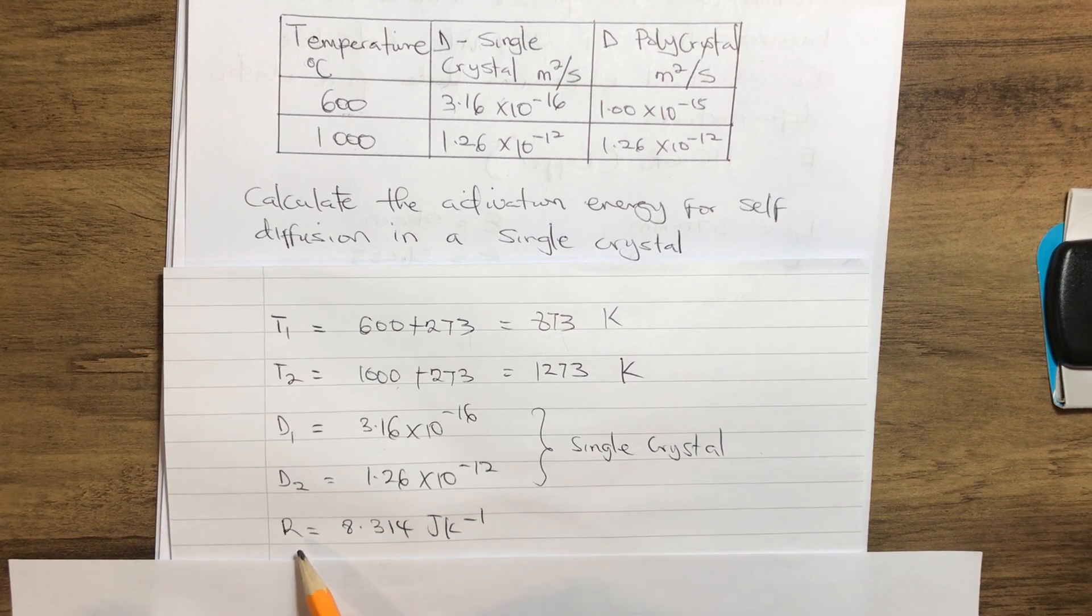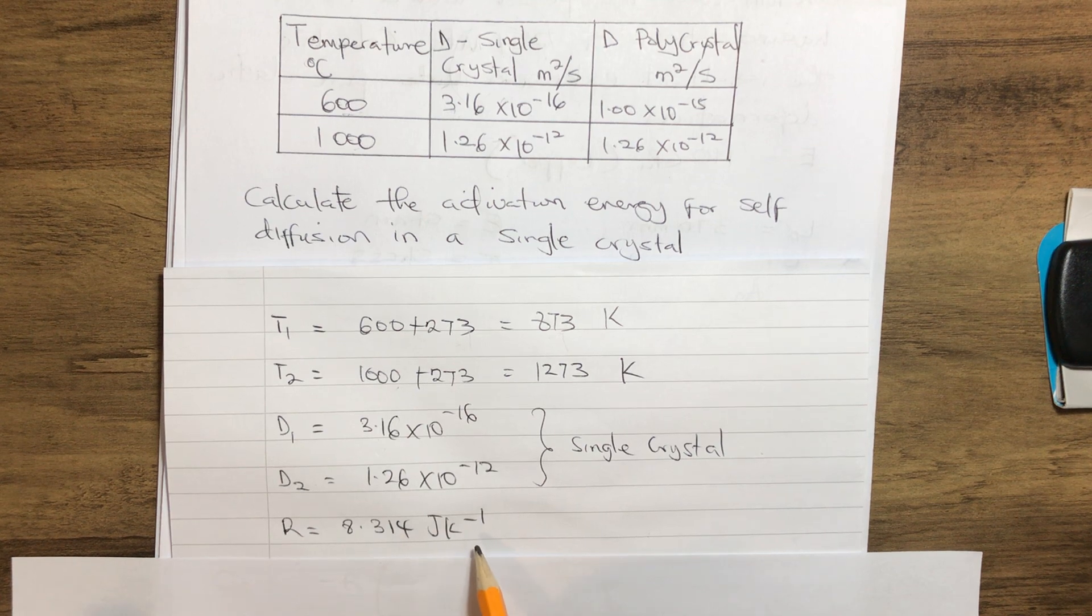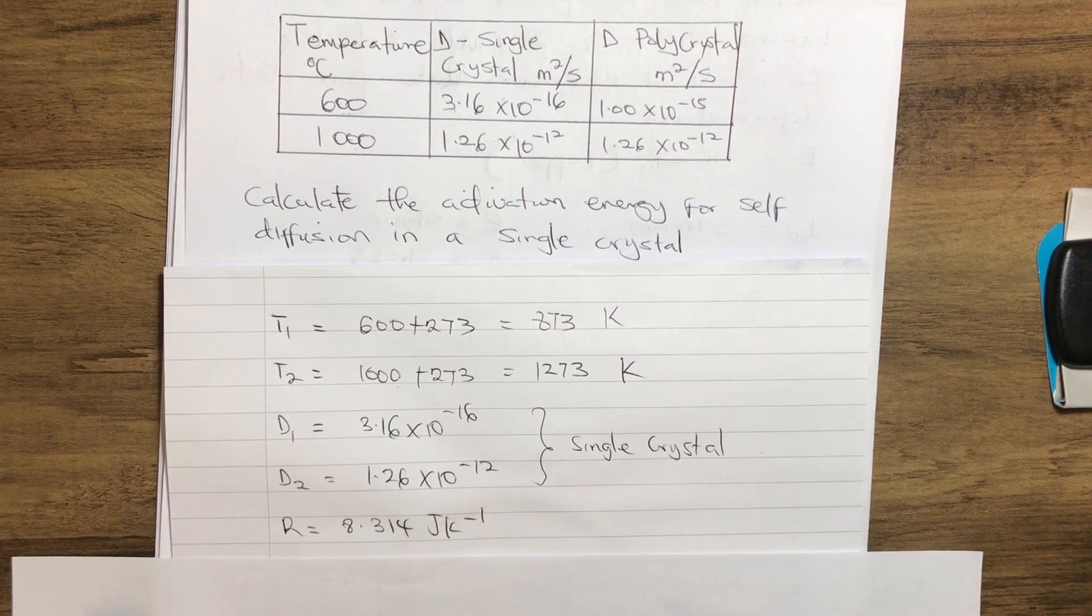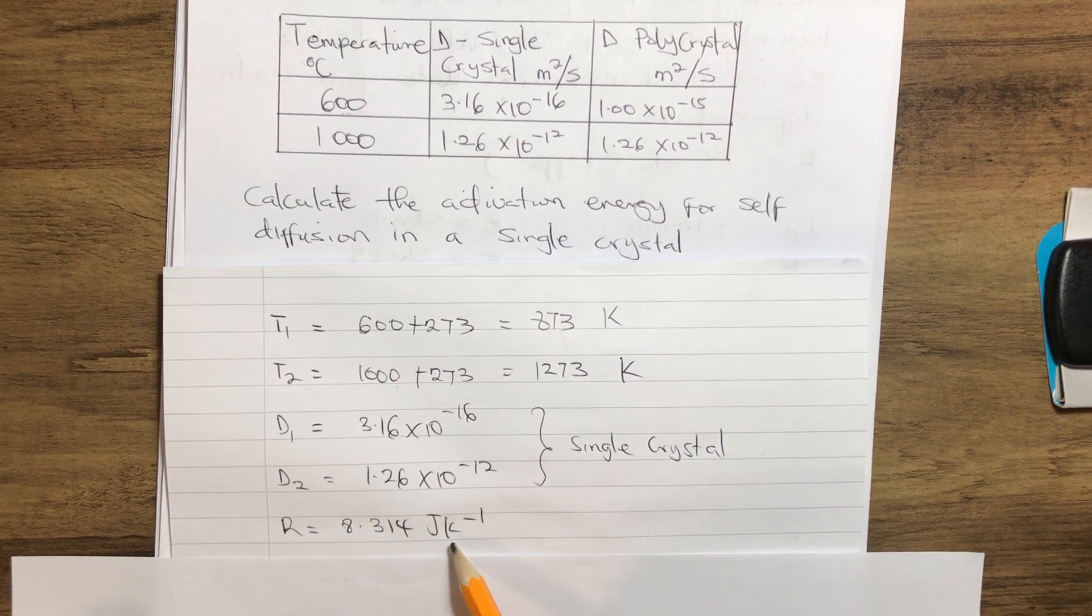Don't let us forget that we have our gas constant, which is 8.314 joules per Kelvin. Our gas constant equals 8.314 joules per Kelvin.